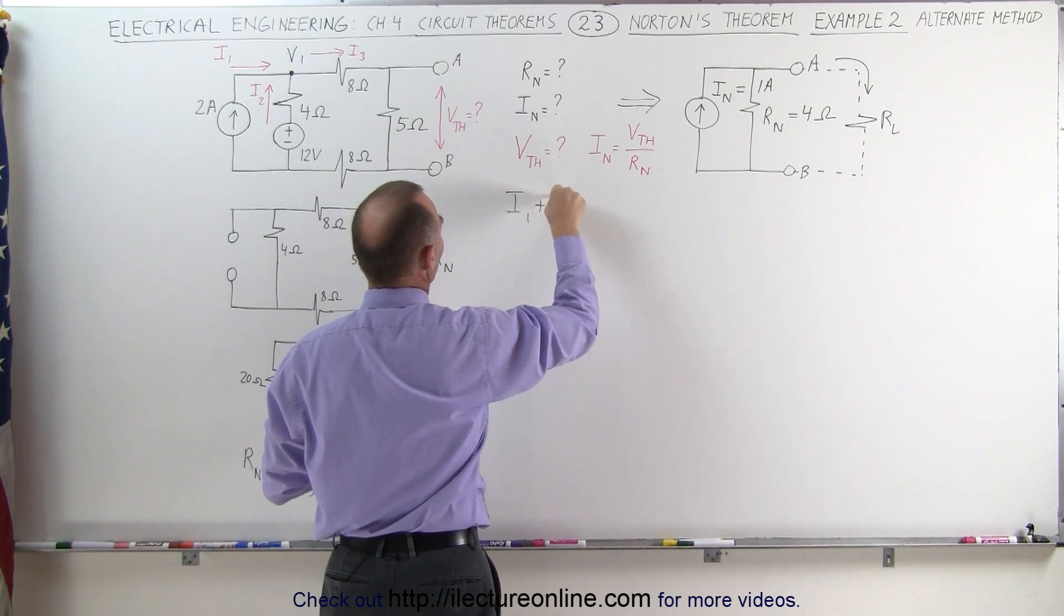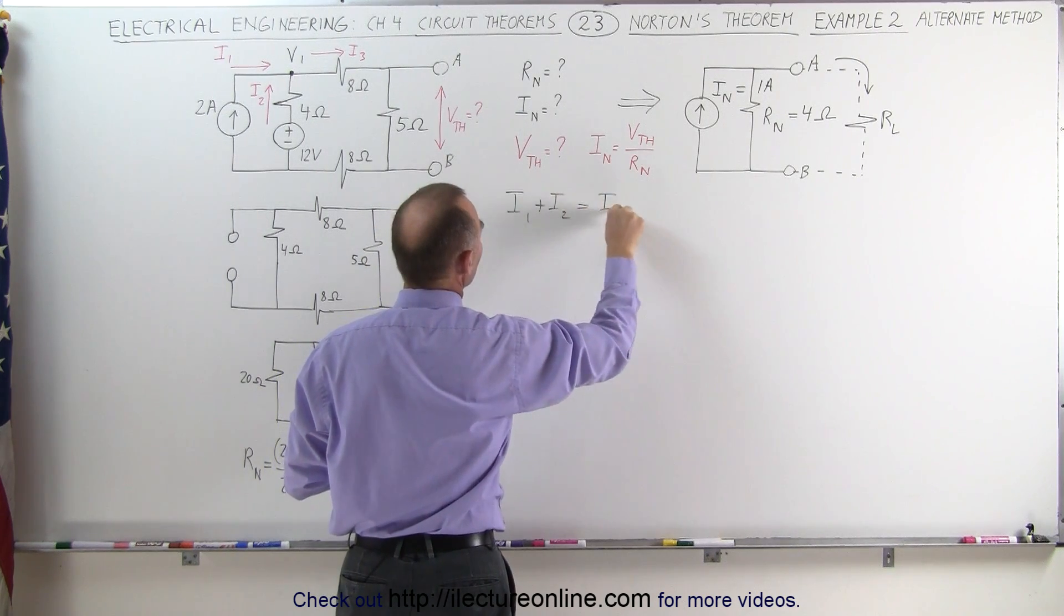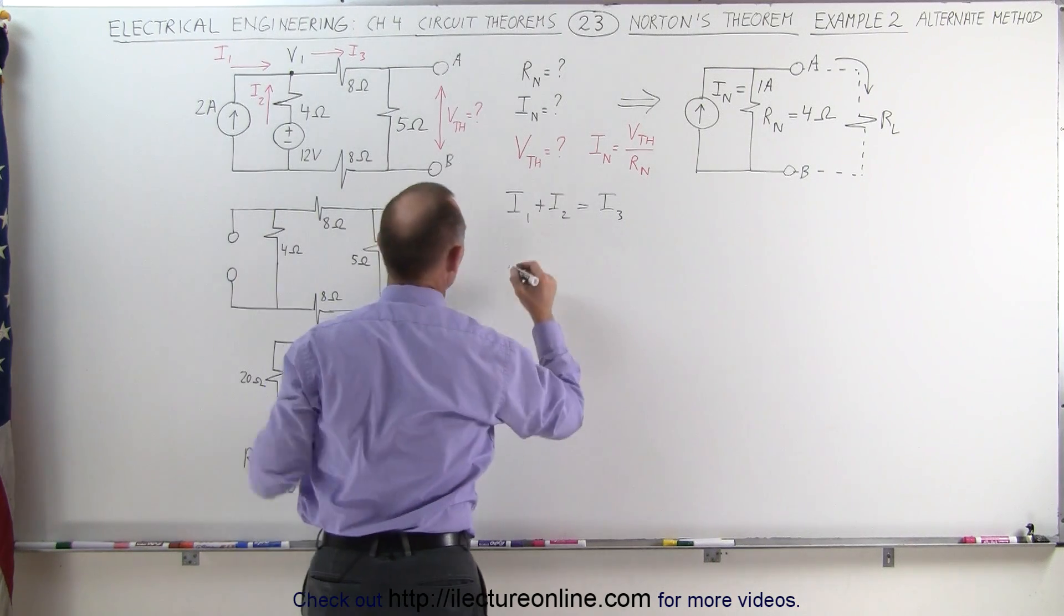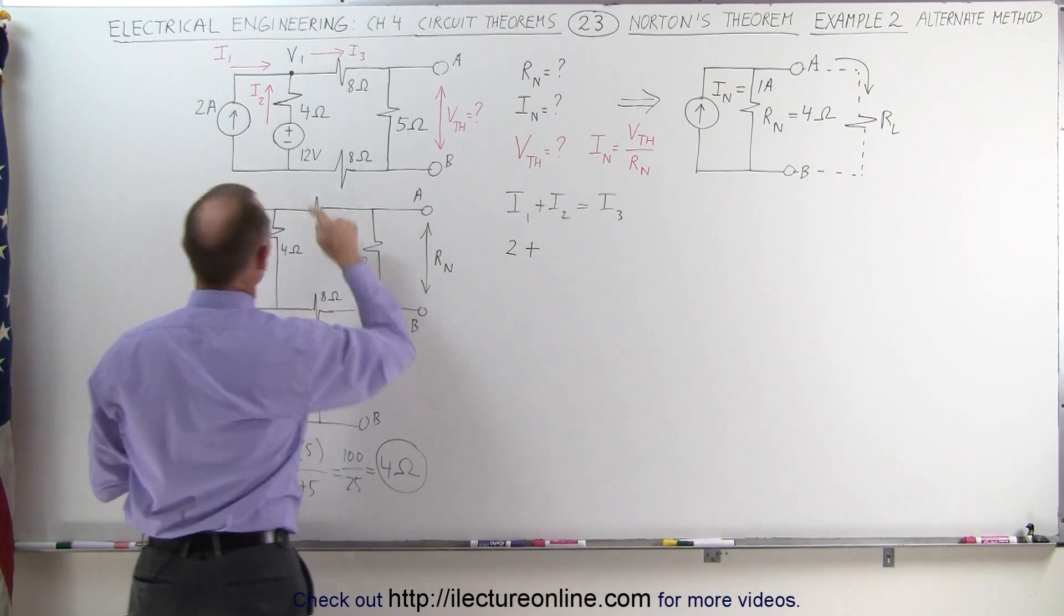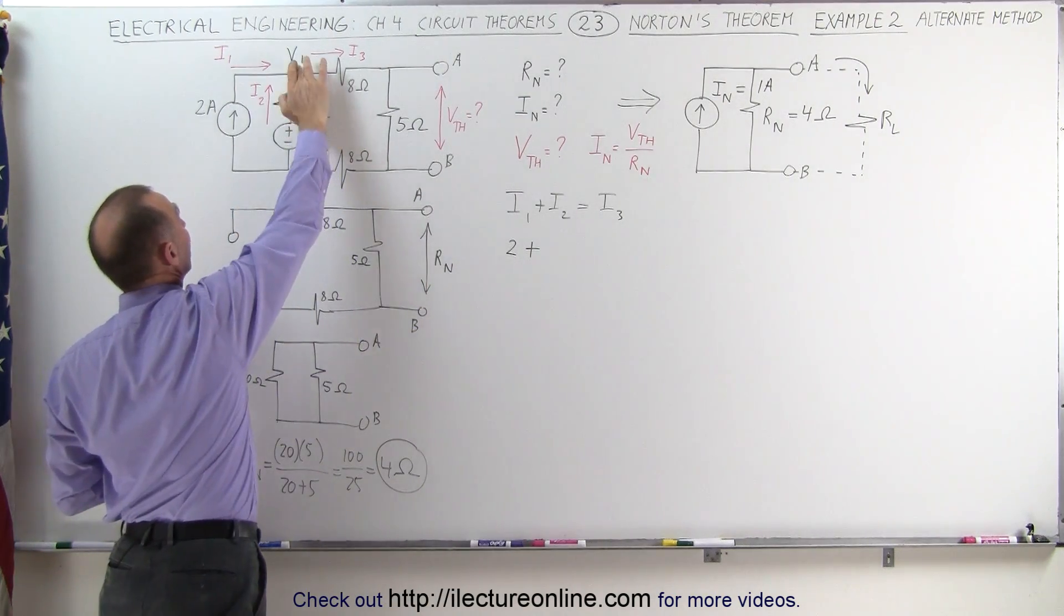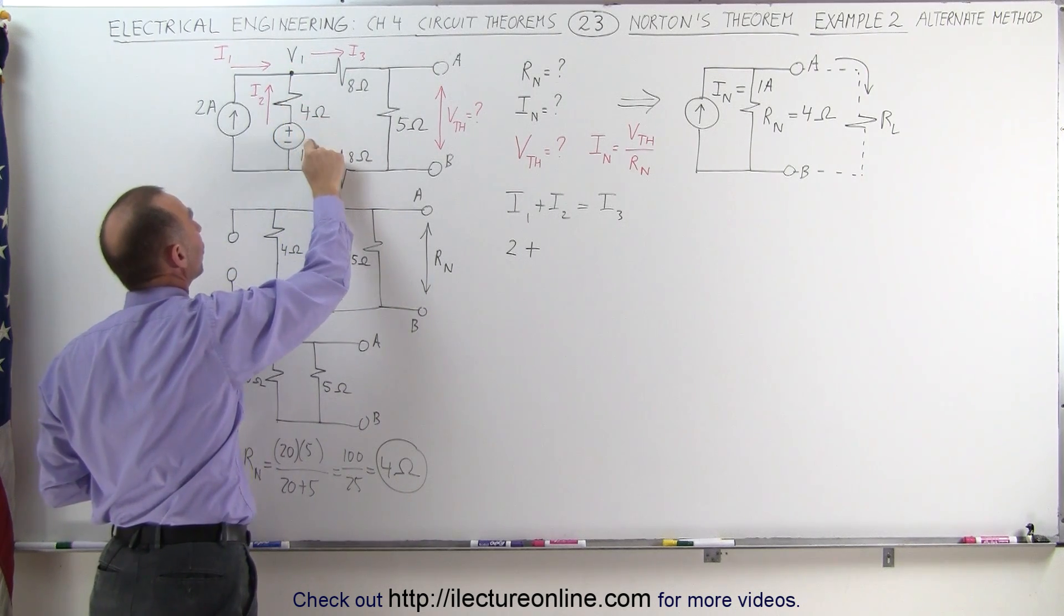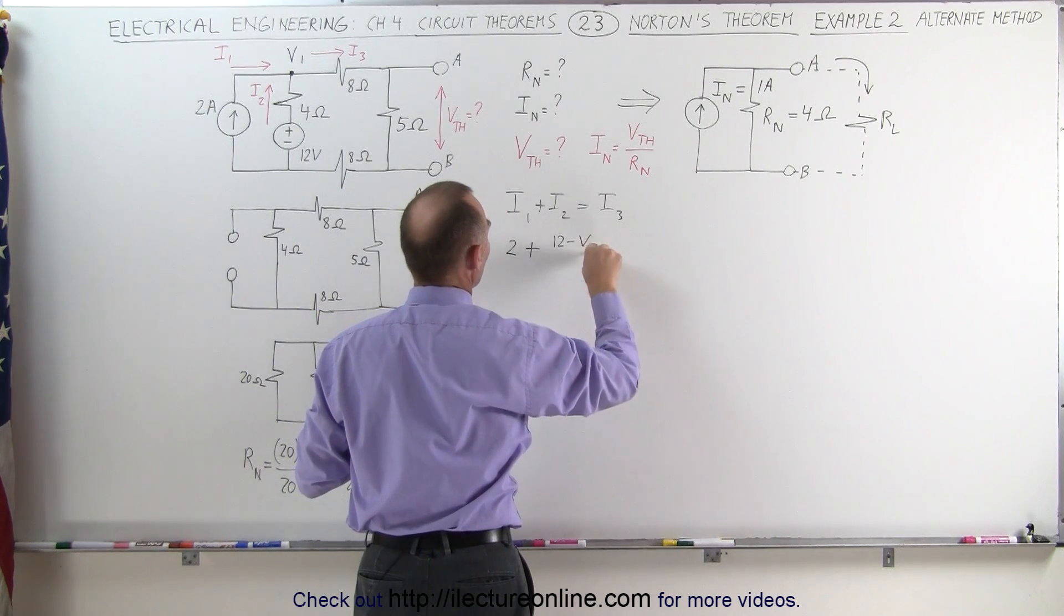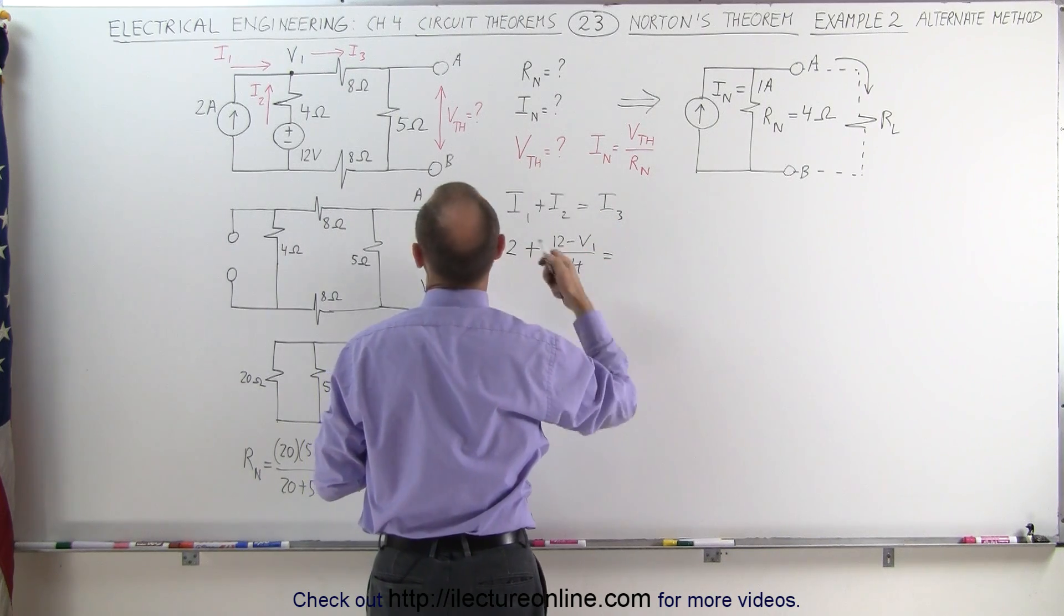I1 plus I2, those are the two currents entering, equals I3, which is the current leaving. Now I1 is easy, that's simply the 2 amp source, 2 amps. But to find I2, that's the current through the 4 ohm resistor. To find that, we take the voltage difference between here and here and divide it by the resistance, which would be 12 volts minus V1 divided by 4. 12 volts minus V1 divided by 4, and that equals I3, which is the current leaving.